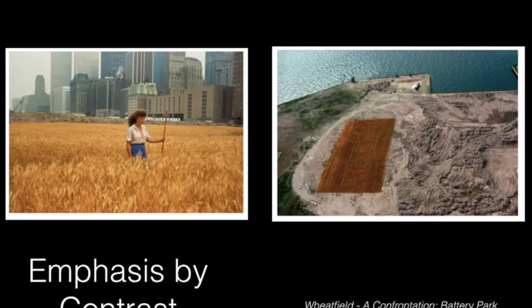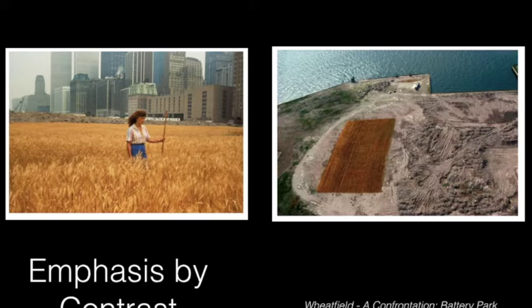Emphasis by contrast. This is Wheatfield, A Confrontation by Agnes Denes. This is a piece that took place in the summer of 1982 in New York City. The artist had an area of land near a shipping yard in New York City, and she planted a whole bunch of wheat. Over the course of the summer, that wheat grew and created this giant field. She actually harvested that wheat and brought it around the country in an exhibition, talking about industry and growth and how our food is a part of that.